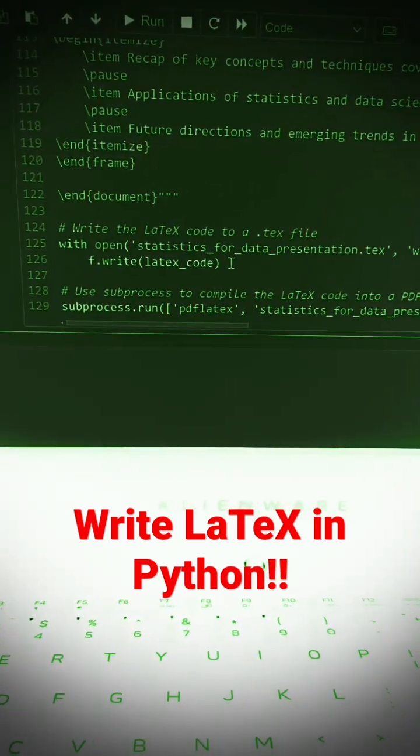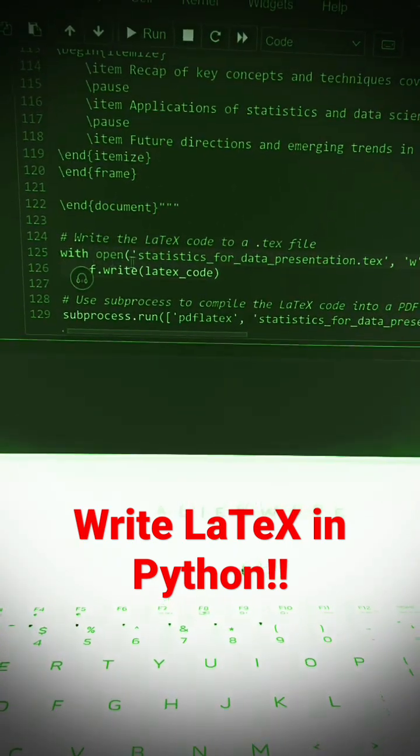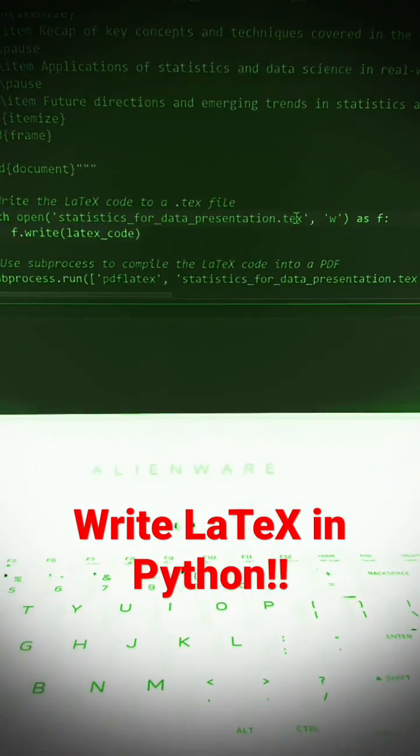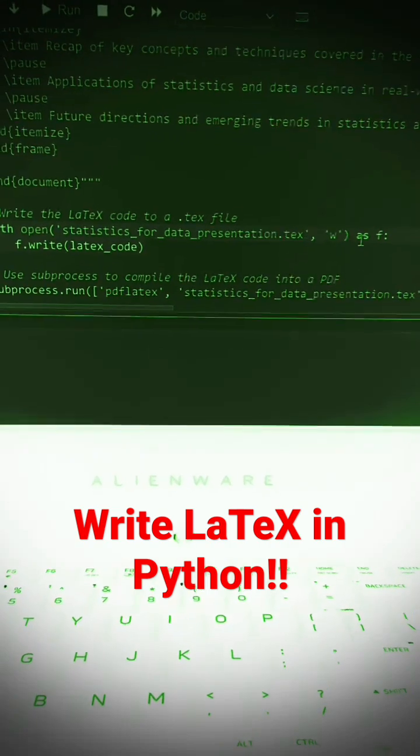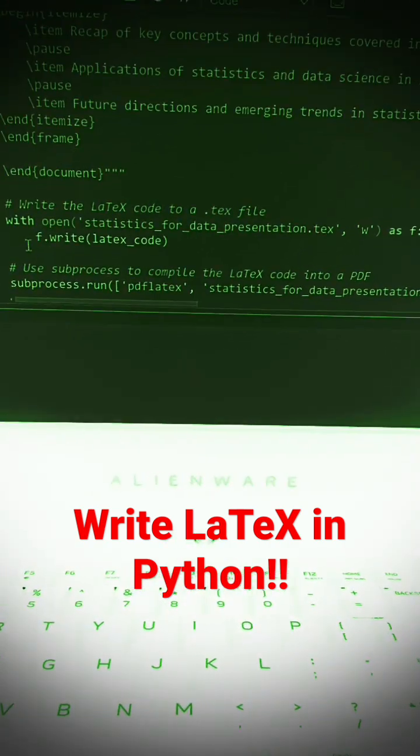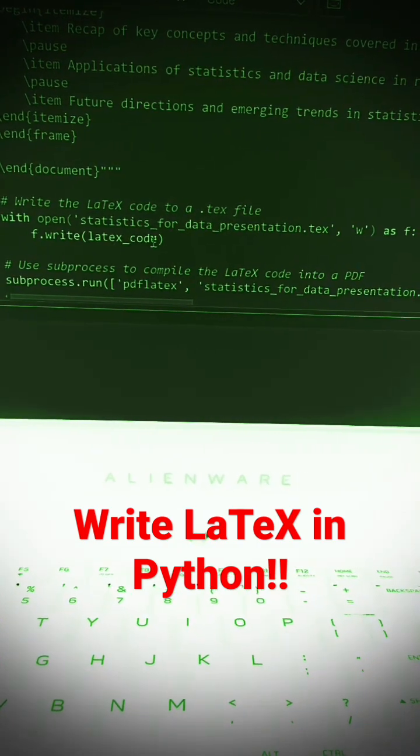And then you go down here and you're going to write two lines of code with open and then the title of your presentation as a dot text file. Open in write mode, that's going to create the file. Then we're going to store it in F. We're going to say F dot write LaTeX code.